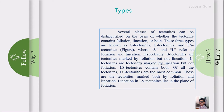Several classes of tectonites can be distinguished on the basis of whether the tectonite contains foliation, lineation, or both. A rock with foliation only is called an S-tectonite. A rock with lineation only is called an L-tectonite. A rock with both foliation and lineation is called an LS-tectonite.